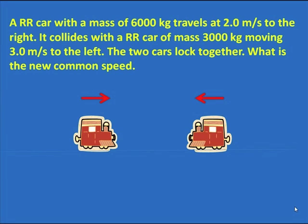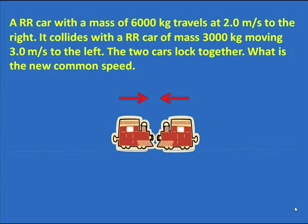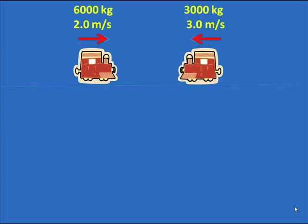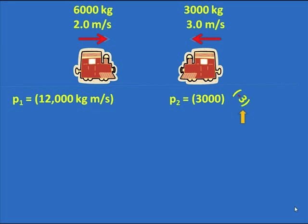In this question, a railway car with a mass of 6,000 kilograms travels at 2 meters per second to the right, collides with one that is moving to the left. They have different masses, different velocities. The momentum of the first one is 6,000 times 2. And the momentum of that second train is 3,000 times... Now look very carefully. It's minus 3. It's moving to the left. Pay very close attention to this. It is minus 3.